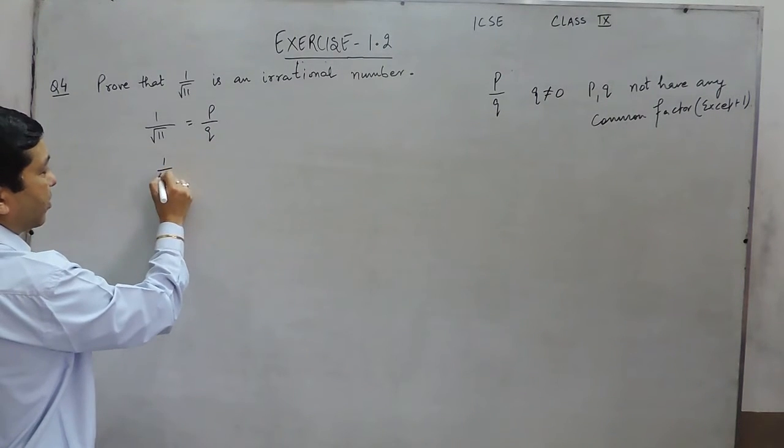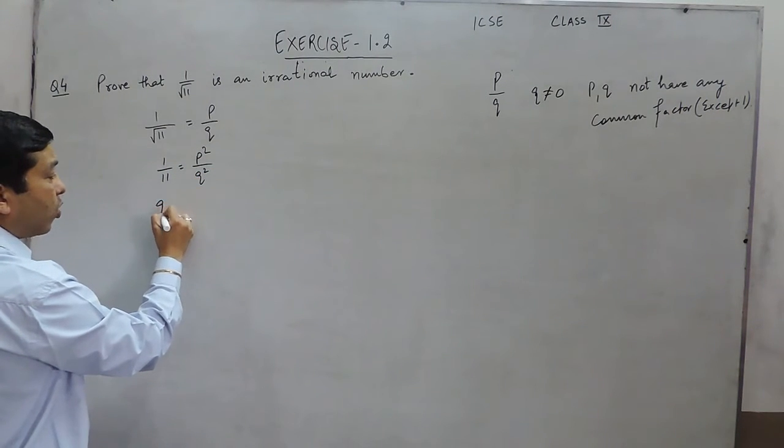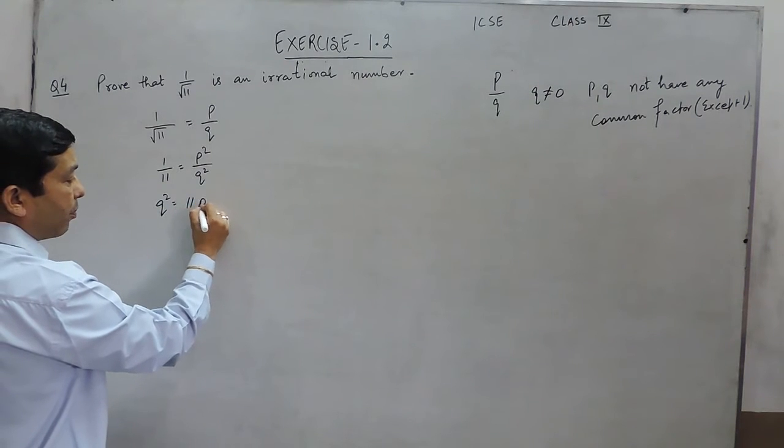Squaring both sides, it becomes 1 upon 11 is equal to P square upon Q square, or Q square is equal to 11P square.